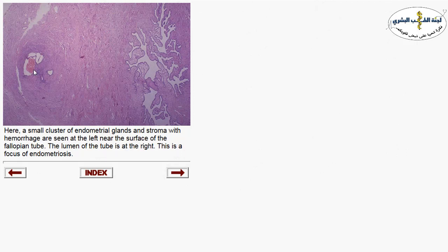Here you see the fimbriated lining of the fallopian tube. Within the wall of the fallopian tube there is a focus of endometrial glands and stroma — this is called endometriosis, meaning endometrial glands and stroma outside the endometrial cavity. The endometriotic glands respond to hormones during the menstrual cycle, causing hemorrhage, secretory changes, shedding, and proliferation.